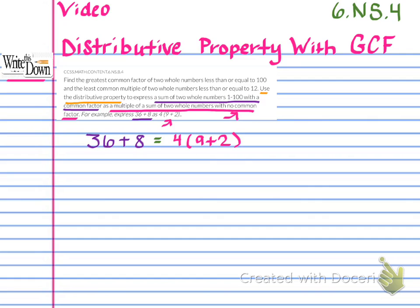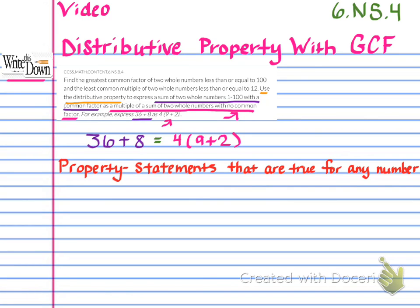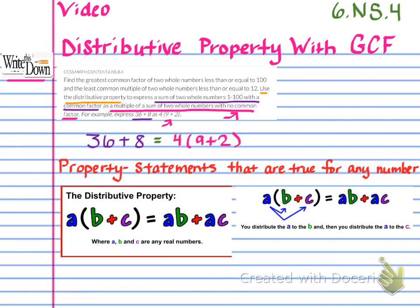Before we dive into the standard, let's look at what the distributive property actually states. First, we need to talk about what 'property' means — properties are statements that are true for any number. Pause the video and write that down. Now I have a visual of the distributive property — copy this down using color, which will be very helpful. What we're looking at is the distributive property written with letters: A times (B plus C) is equal to AB plus AC, where A, B, and C are any real numbers. You can see the A being distributed to the B and to the C, giving you AB plus AC.